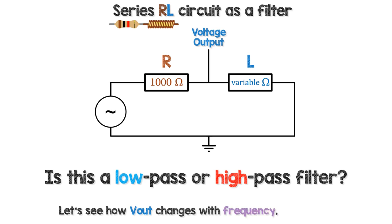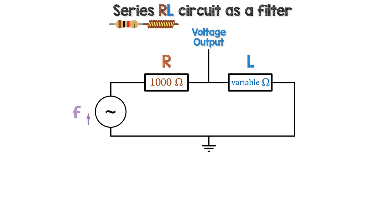Let's see how Vout changes with the frequency to see what type of filter it is. As we increase the frequency, the inductive reactance XL increases. From Ohm's Law, as XL increases, the inductor voltage VL increases, which is our output.